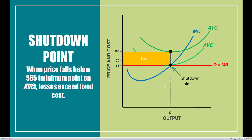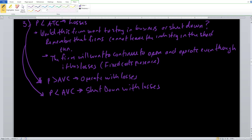This leads us to something known as the shutdown points. The shutdown point is essentially going to be the minimum of our average variable cost curve. At this point, the firm is essentially indifferent between shutting down and continuing to operate, because the losses in both scenarios will be exactly equal to one another. For example, the price is equal to $65 and the average total cost is equal to $80, so losses exist, but the firm is exactly able to cover the minimum of the average variable cost.